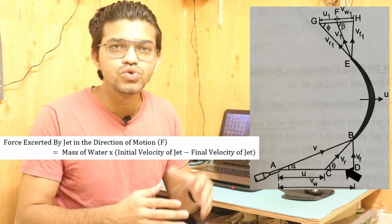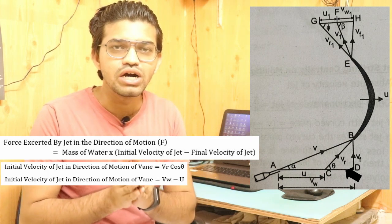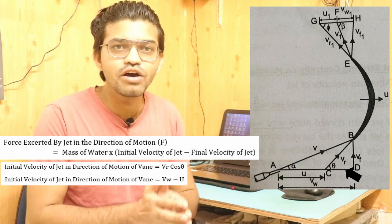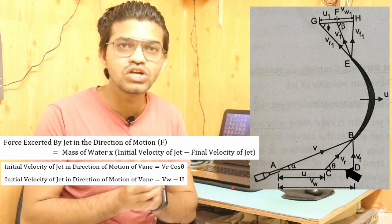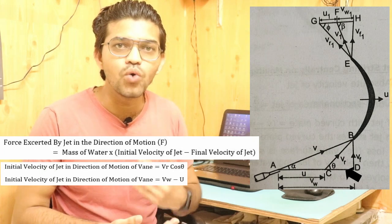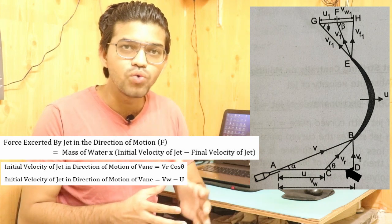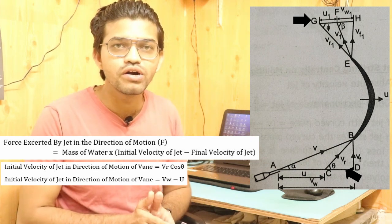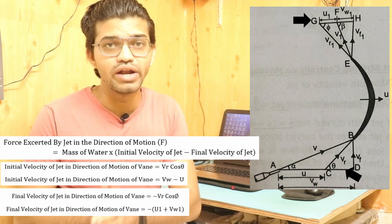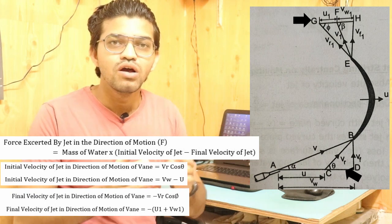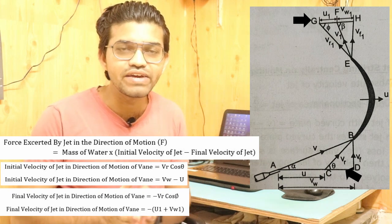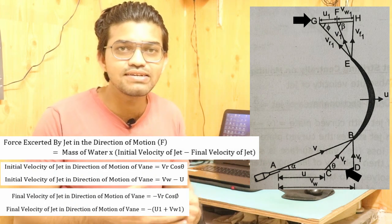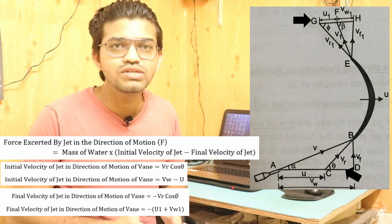So cd equals vw minus u, which is the inlet velocity component in the direction of vane motion. For the outlet, the horizontal component of vr1 is u1 plus vw1, but it is taken as negative because this direction is opposite to the direction of the moving blade. With all velocity components identified, we have everything needed to calculate the force exerted by the jet on the vane.